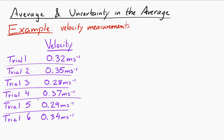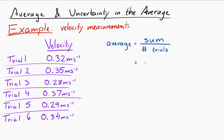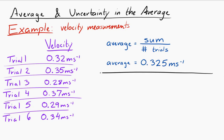Pretty consistent — good data. So in order to find the average, finding the average is pretty easy — you've probably done it before. To find the average, you take the sum and divide by the number of trials, in this case six. So if you do that, you get 0.325 meters per second. That's the average.